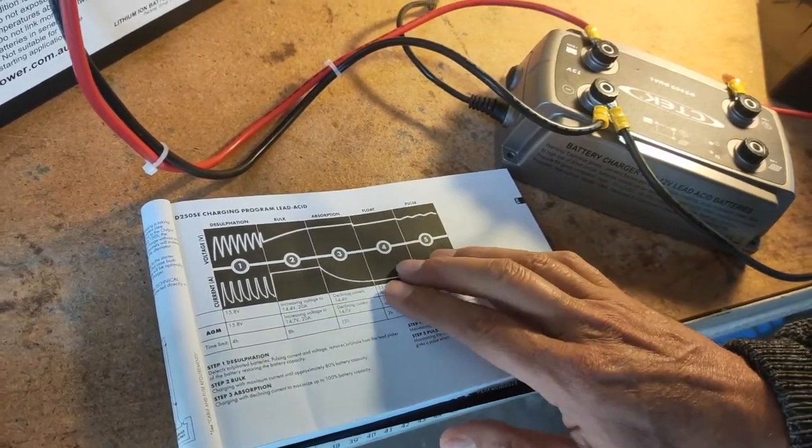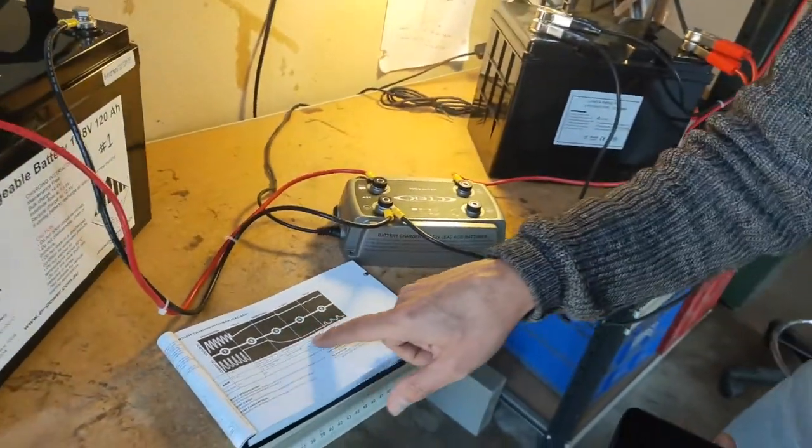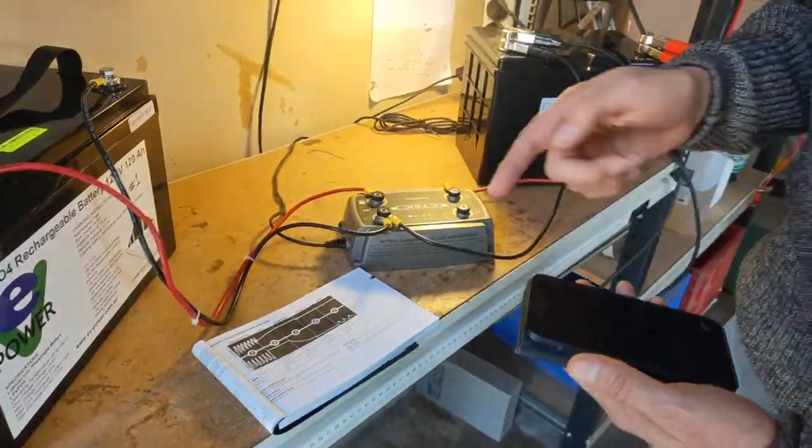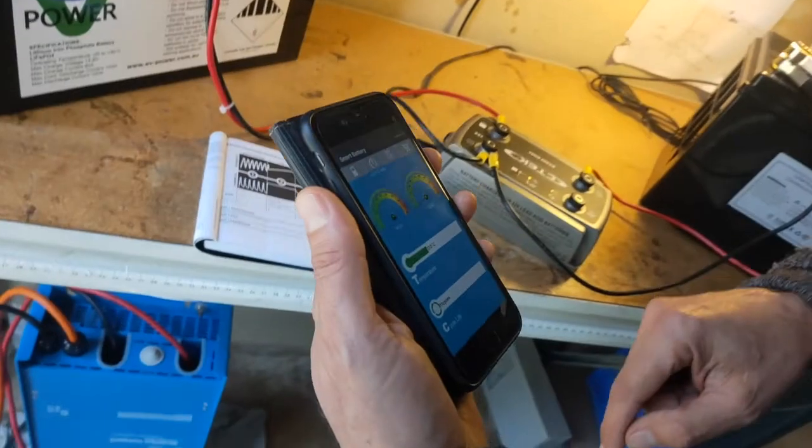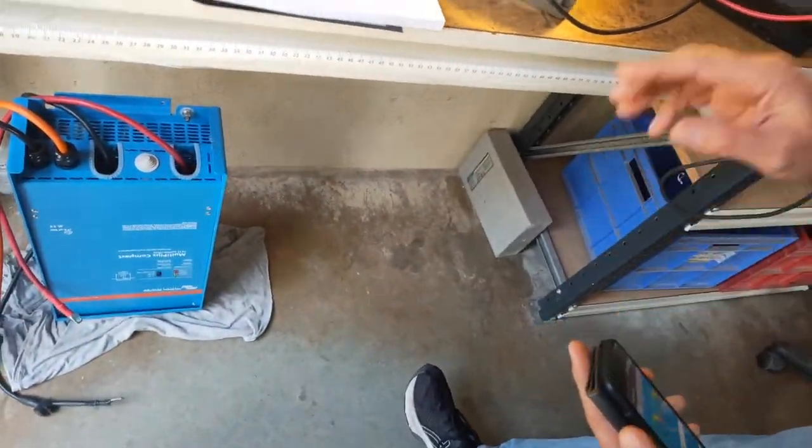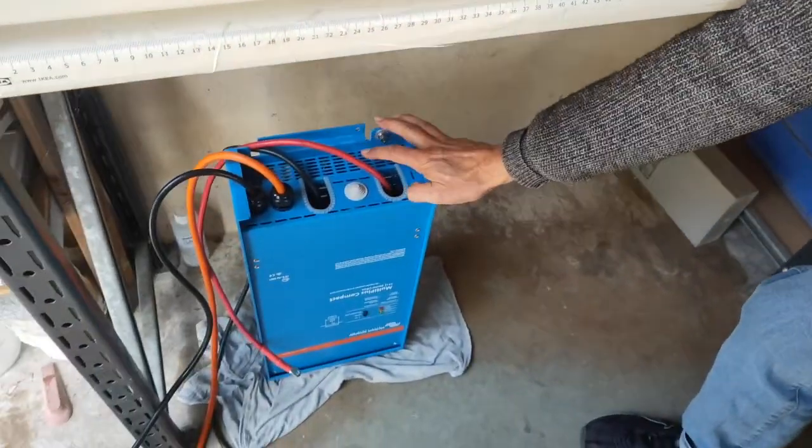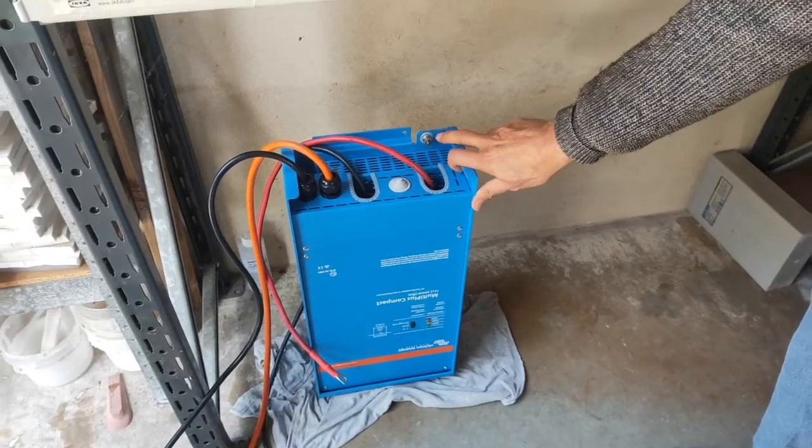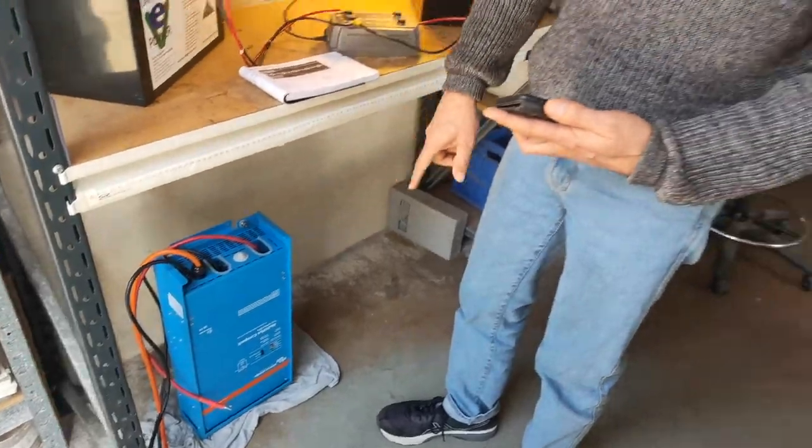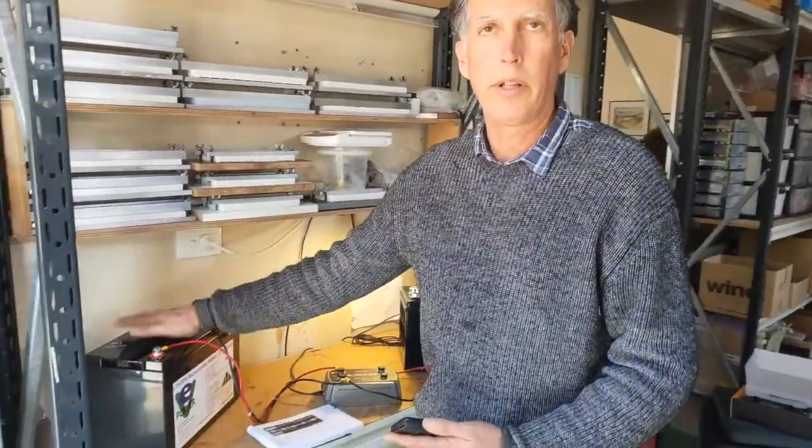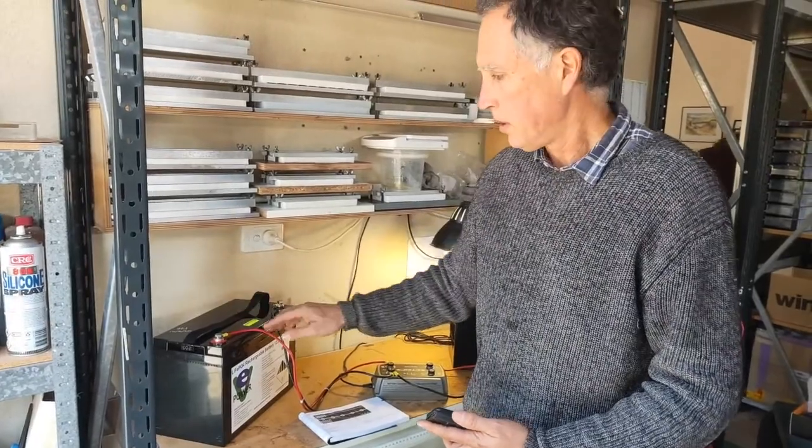But what I'd like to do now, now that we've dropped into float and verified that's all working really good, we're going to use this expensive and powerful inverter, it's a Victron, and I'm going to connect some kind of load up to that, like a toaster or something, and I'm going to run this battery dead flat.